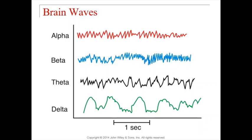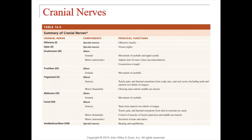To finish off this chapter, just like with the spinal cord, we're going to look at nerves coming off the brain — what we call cranial nerves. For each cranial nerve, you need to know whether it's a purely motor nerve, a purely sensory nerve, or a mixed nerve carrying both motor and sensory information, as well as its specific function. Table 14.4 highlights this information. Know the nerve, know whether it's motor, sensory, or mixed, and know its specific function.